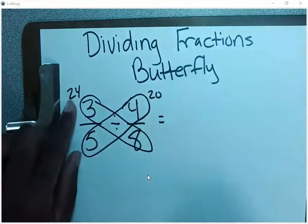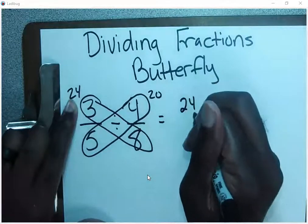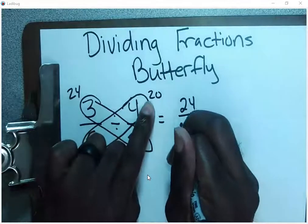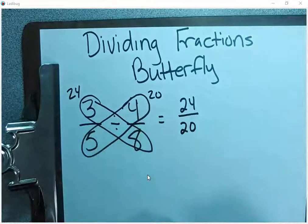This product always goes as your numerator. Numerator is your top number of the fraction. This becomes your denominator, which is the bottom number of your fraction. So now I have 24 over 20 as my fraction.